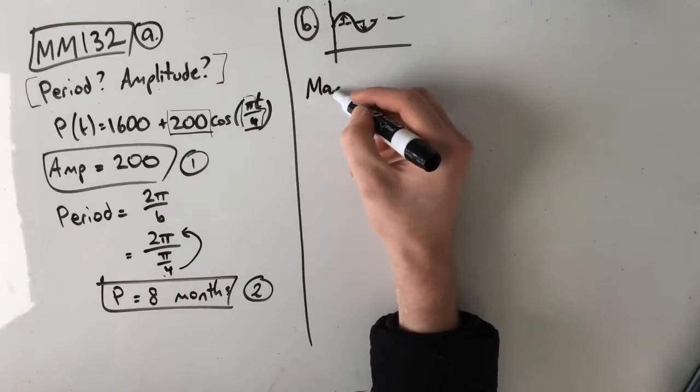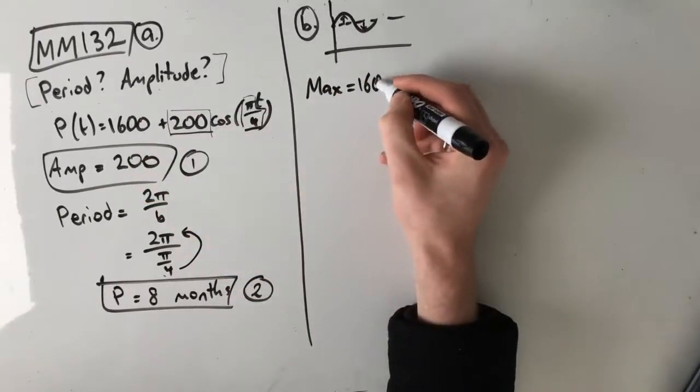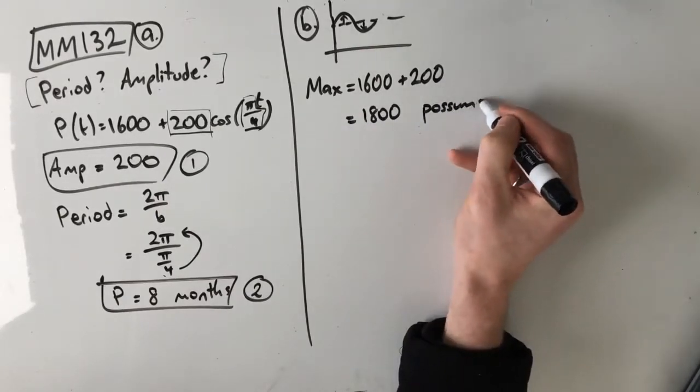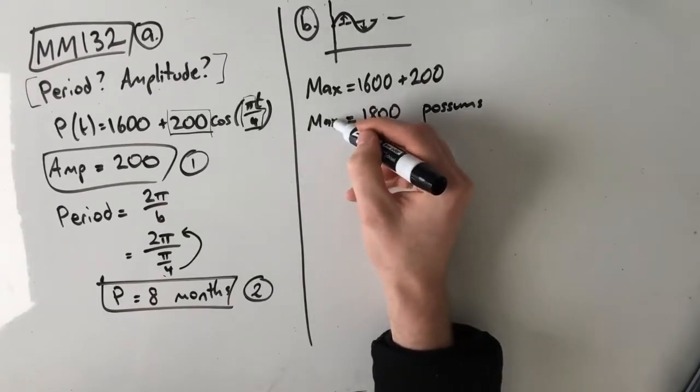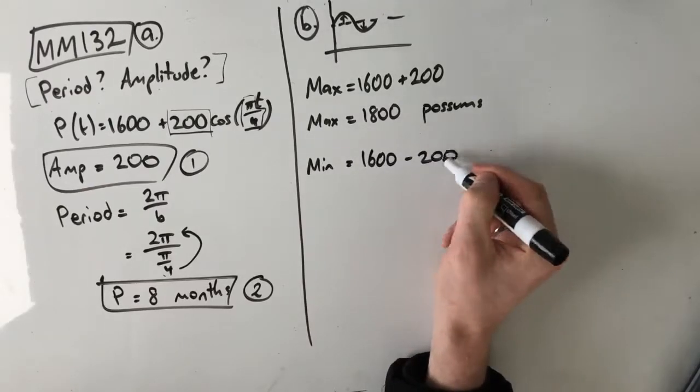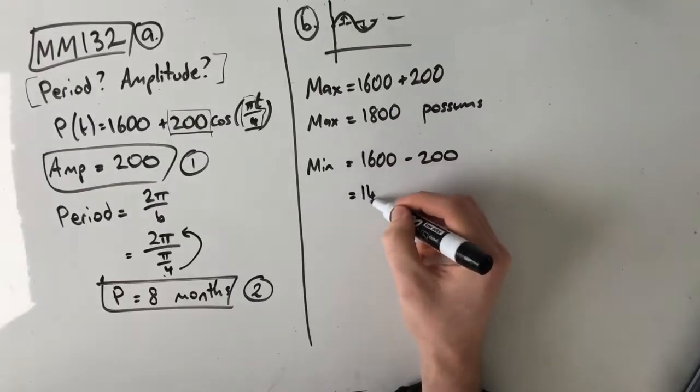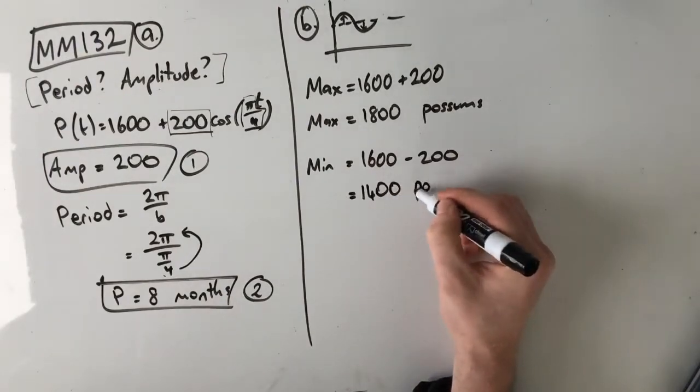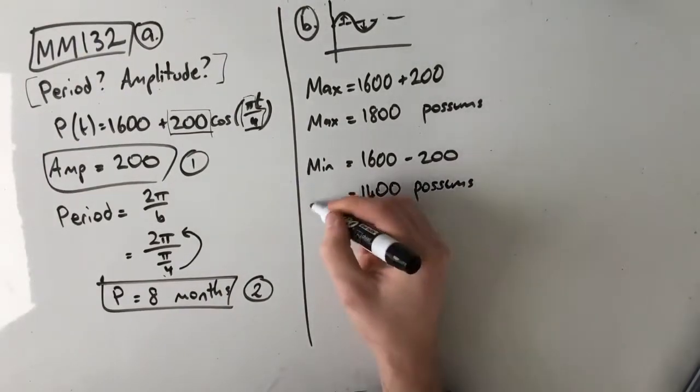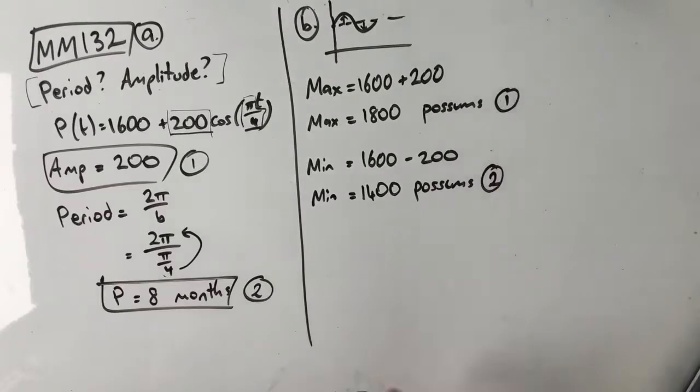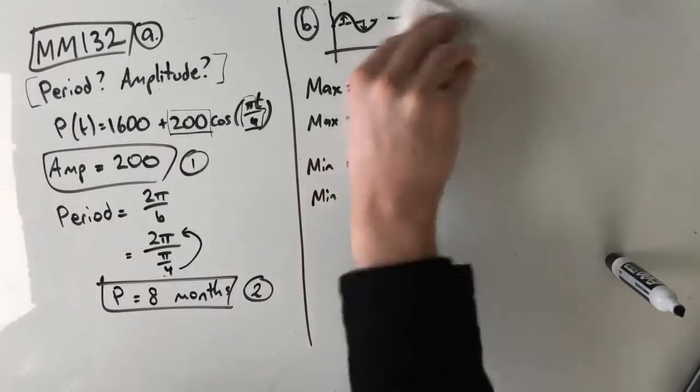Our max is equal to 1600, our midpoint, plus 200, which is equal to 1800 possums. Remember possums in this case is our units, so don't forget those. Our minimum is just 1600 minus 200, which is 1400 possums. That's it. So this is a two mark question. First mark here, second mark here. Pretty straightforward. Please let me know if you have any questions about it, but we're just going to jump straight into part c.